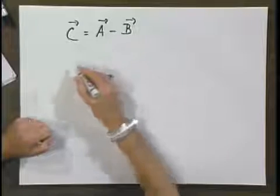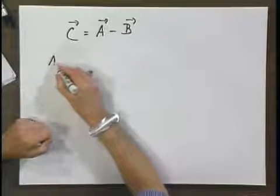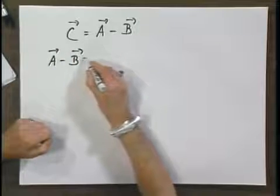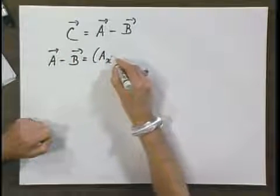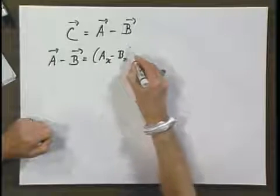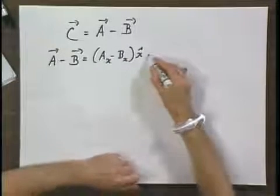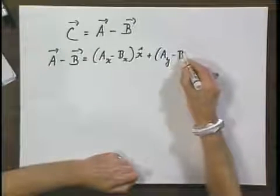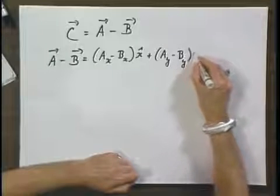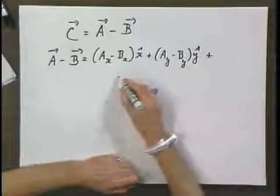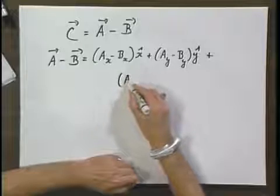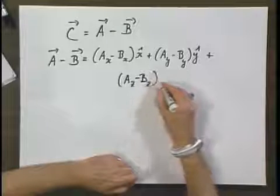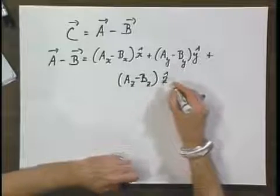then it should not come as a surprise that A minus B equals Ax minus Bx in the x direction, plus Ay minus By in the y direction, plus Az minus Bz in the z direction.